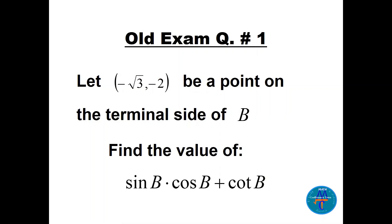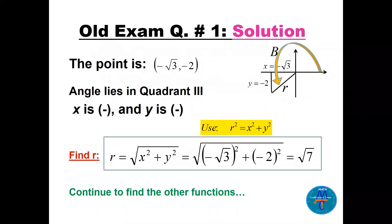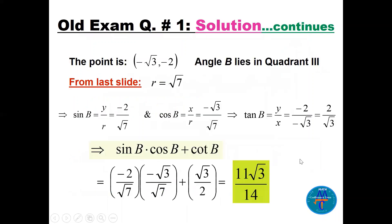We need to find sin(b)·cos(b) + cot(b). Since x is negative and y is negative, we know this angle is in Quadrant 3. We find r using r = √(x² + y²). Squaring the negatives, we get r = √7. Remember r is always positive.